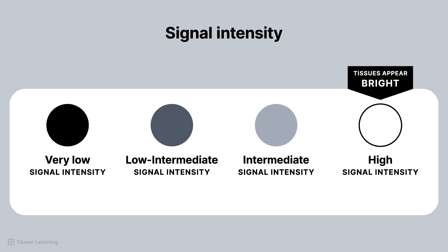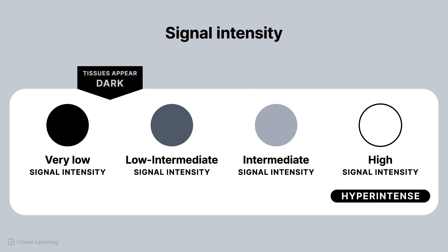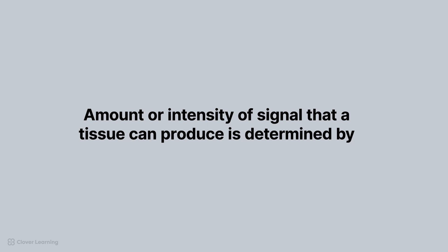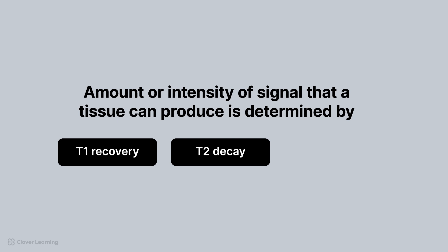Tissues can appear bright in areas of high signal or hyperintensity, dark in areas of low signal or hypointensity, or in shades of gray in areas of intermediate signal, depending on their characteristics and the type of MRI sequence used. The amount or intensity of signal that a tissue can produce is determined by T1 recovery, T2 decay, and proton density.